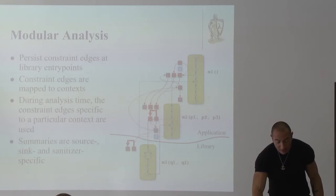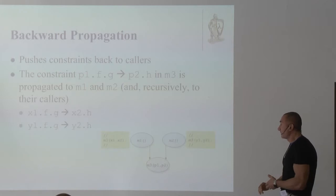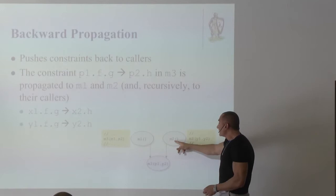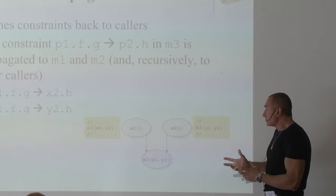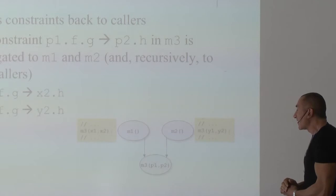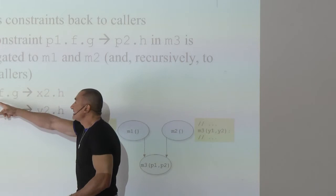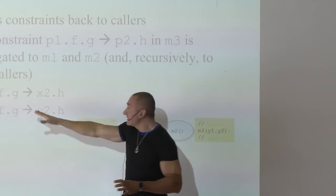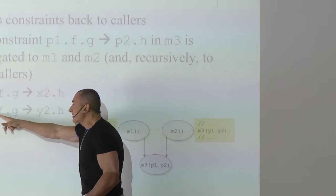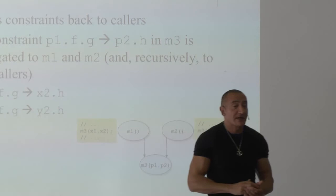There is also a need for backward propagation. Suppose method M1 calls M3 with parameters x1 and x2, and M2 also calls M3 with parameters y1 and y2. If we've learned that when x1.f.g is tainted, x2.h is also tainted, we can apply the same conclusion for the second call site — if y1.f.g is tainted, then y2.h is tainted. If y1.f.g is not tainted, we don't need to apply the rule. This is what we mean when we say the analysis is context-sensitive.